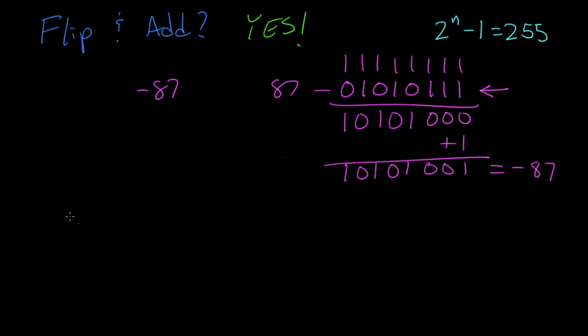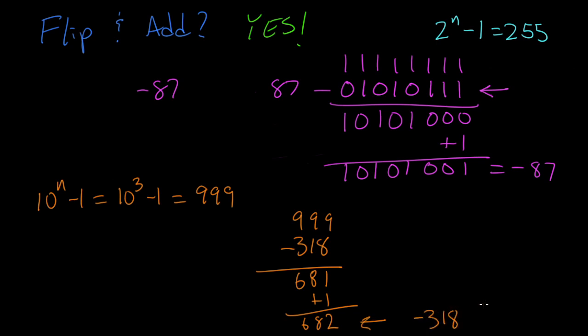Now for base 10, the number we're subtracting from is 10 to the nth minus 1. In our case, n is going to be 3, so this will be 10 to the 3rd minus 1, or 999. Let's try it out. Negative 318 subtracted from 999 gives us 681. And then the last step is to add 1, 682. And if you recall, this is the same number as negative 318 in 10's complement.